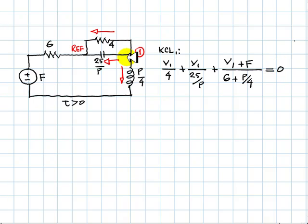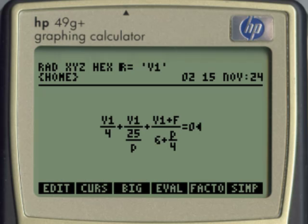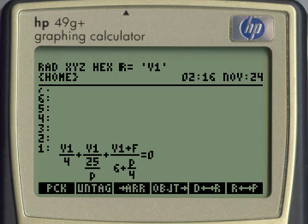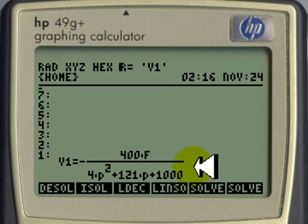There is no current that I drew entering the node. And now we solve for V1. That is the equation we need to solve for V1. That is the differential equation in V1.